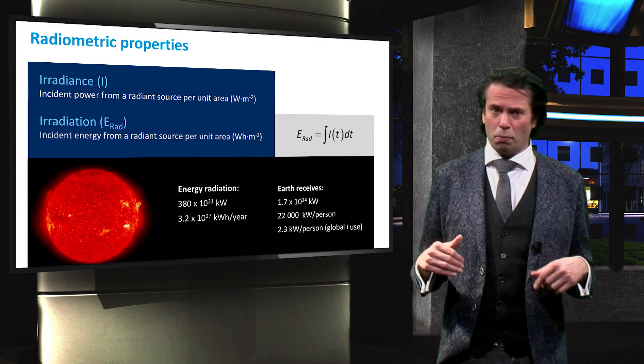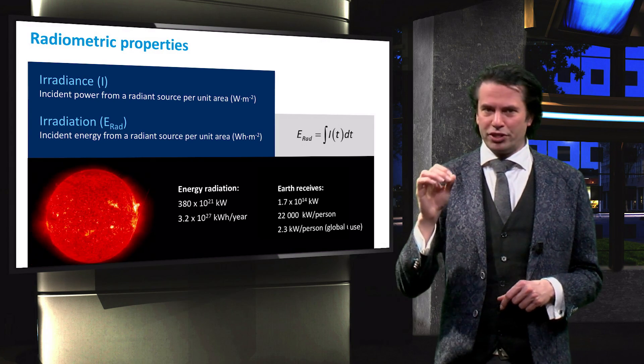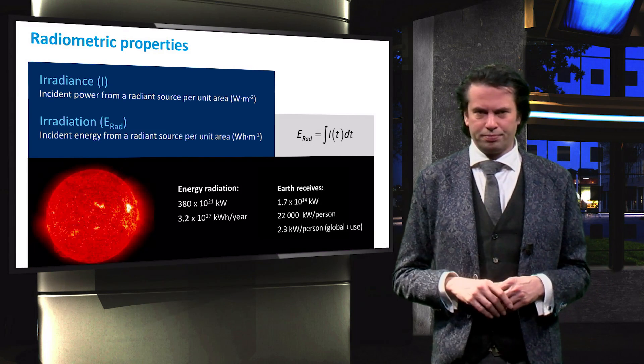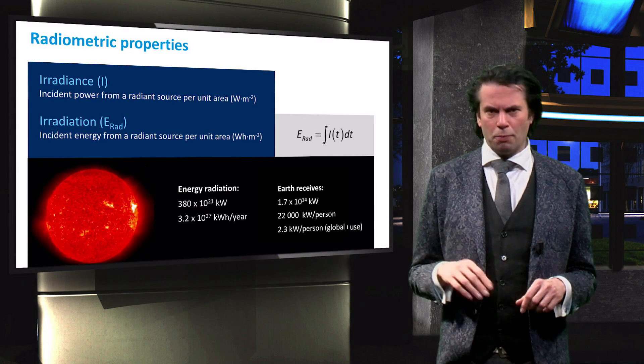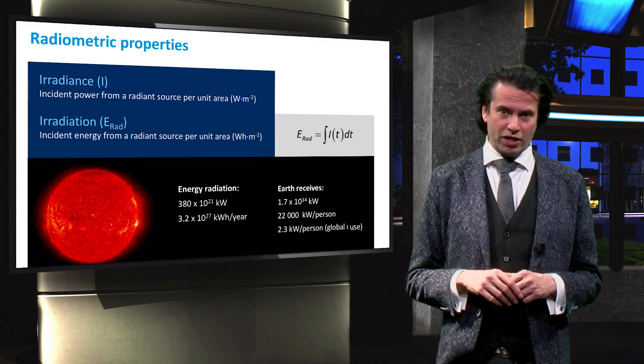Not only the total power incident on a surface is important, also the spectral distribution of the incident power plays a major role. Not all wavelengths of light are emitted equally by our sun. Moreover, solar cells can only use a fraction of the incident wavelengths.